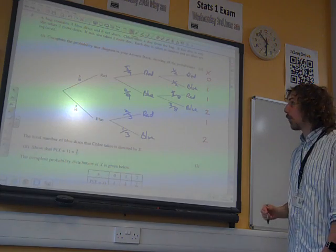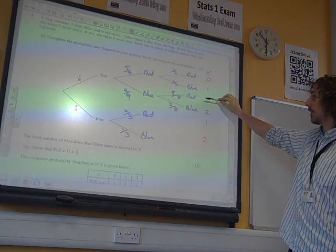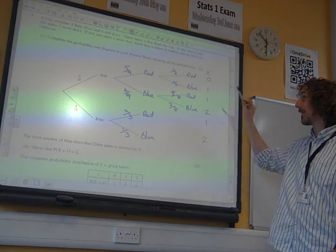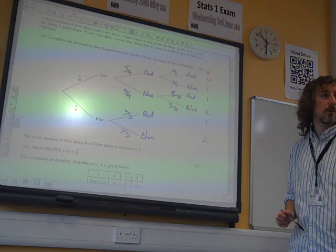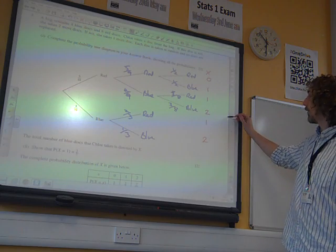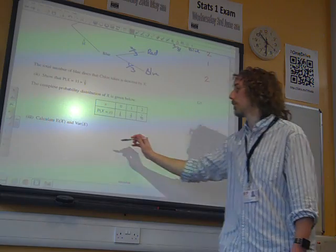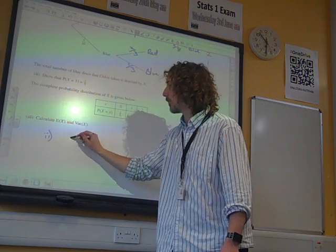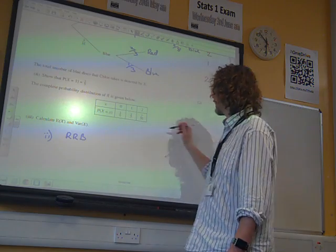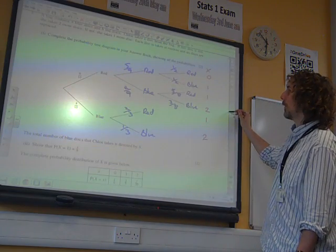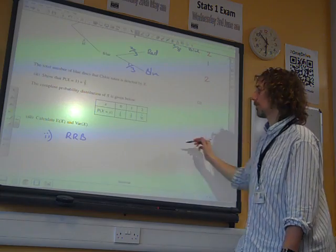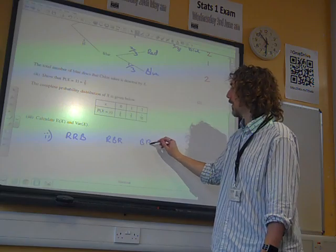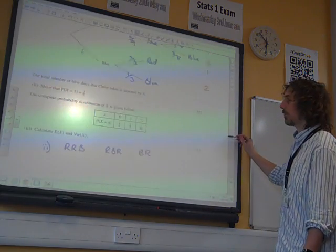So the way that x could be one is this branch, this branch, and this branch. So the probability of x being one, we need to add together those probabilities. So that was the first one came from red, red, blue. The second one came from us doing red, blue, red.